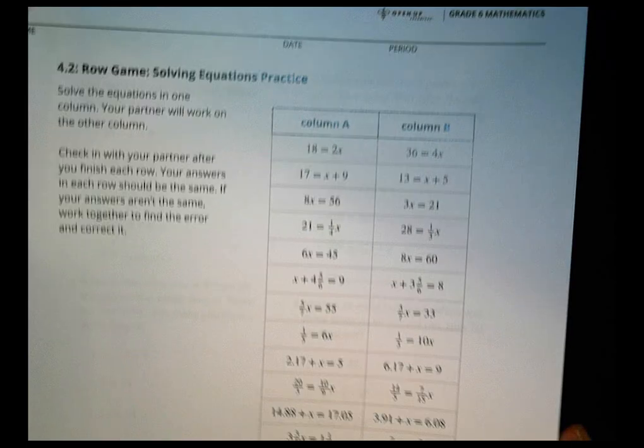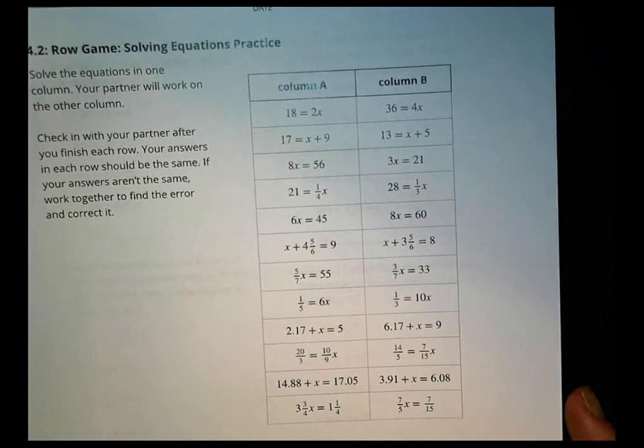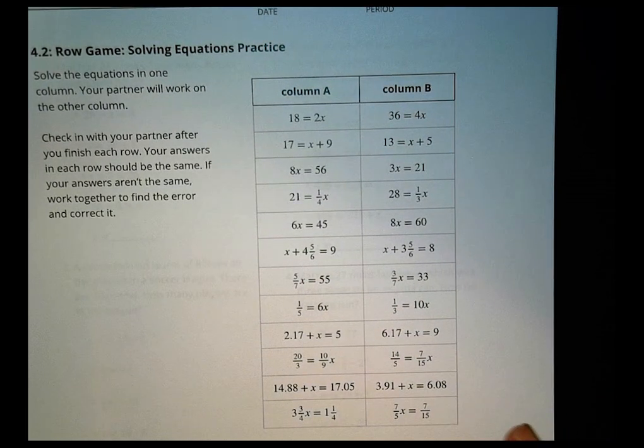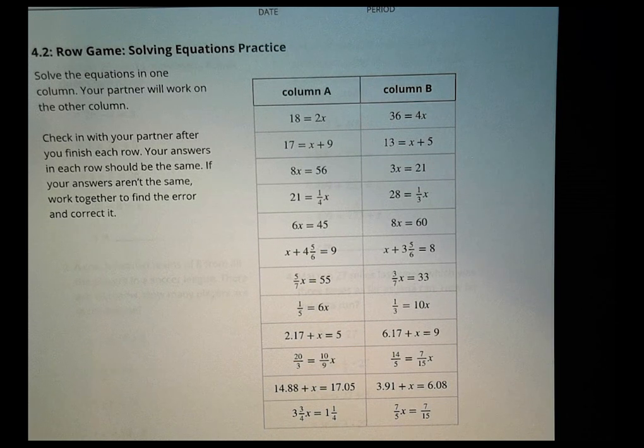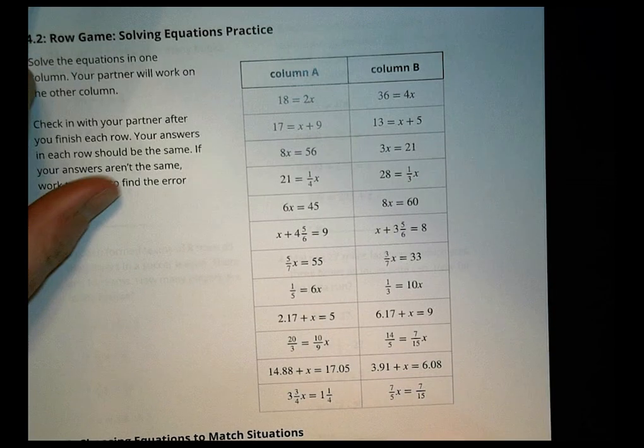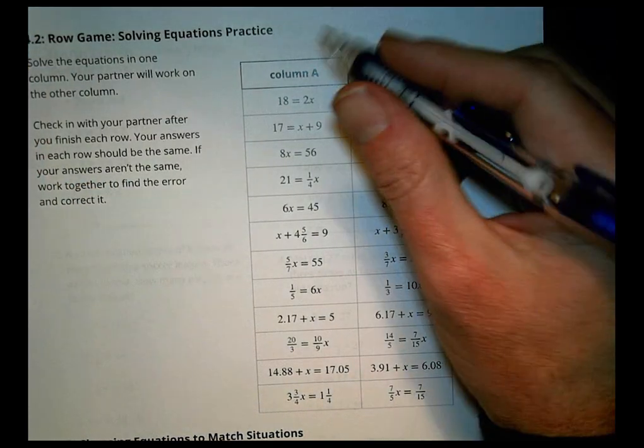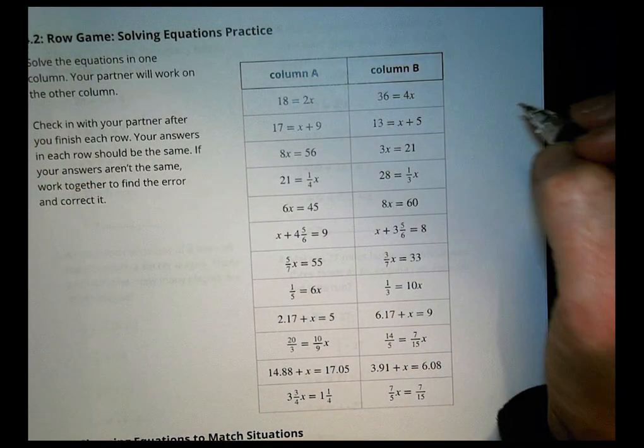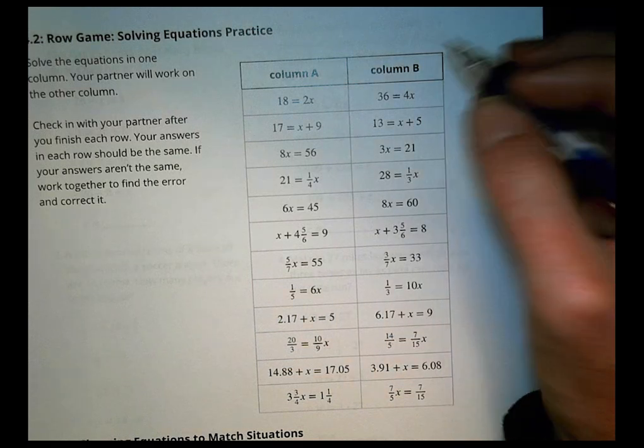On this first activity, what you're going to do is I want you to work with a partner. And one partner's going to solve column A, and one partner solves column B. Your answers in each row should be the same. If they aren't, you want to work together to find the error and correct that to see what you come up with there. For those of you working at home on your own, I'm going to do column A. You can do column B and see if you get the same answer.